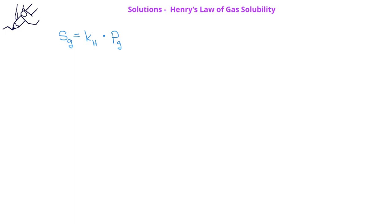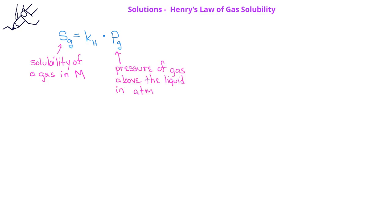In this equation, S with a g subscript indicates the solubility of the gas in units of molarity. P with a g subscript indicates the pressure of the gas above the liquid, with units in atmospheres. K with a subscript H is known as the Henry's Law constant and has units of molarity per atmosphere.